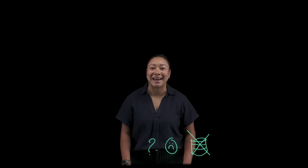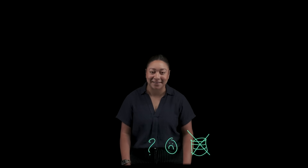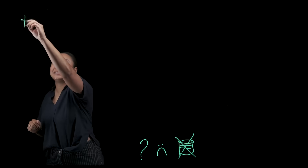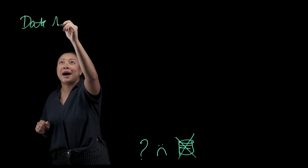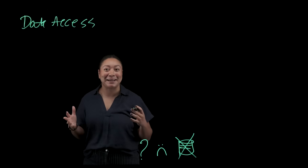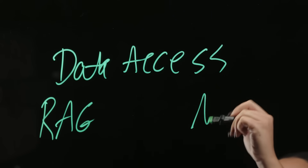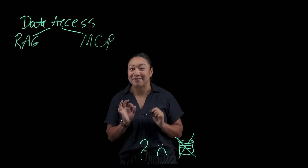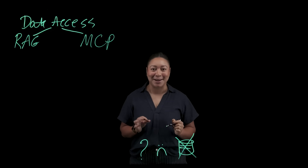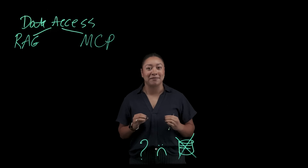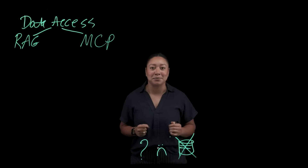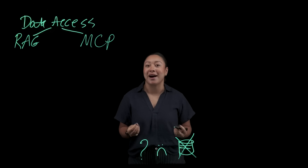You know how everyone's always saying AI is only as good as the data you give it? They're actually totally right. Today, we're going to unpack two different ways to give agents access to data. RAG helps models know more by pulling in the right information, while MCP helps models do more by connecting them to tools and systems that drive work.